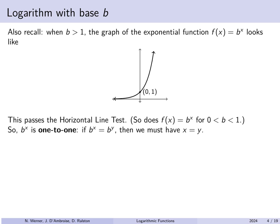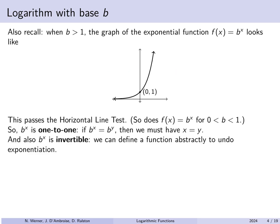Since this is a one-to-one function, if plugging in two different values for your exponent gives the same overall value, then the inputs must have been the same. If b to the x equals b to the y, then x must equal y — this is really what it means to be one-to-one. Which means this function is invertible. One-to-one functions can be abstractly inverted.